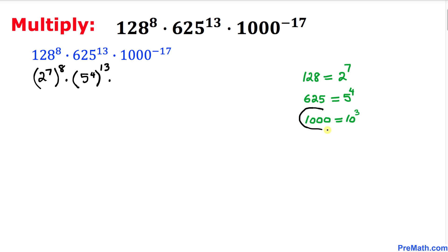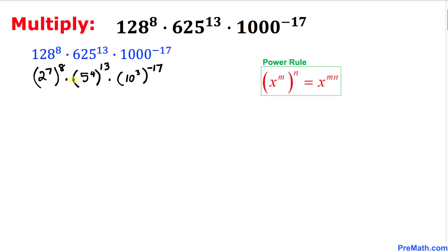Now let's focus on 1000. We know that 1000 can be written as 10 power 3, so let me replace 1000 by 10 power 3, and then raise it to power negative 17.